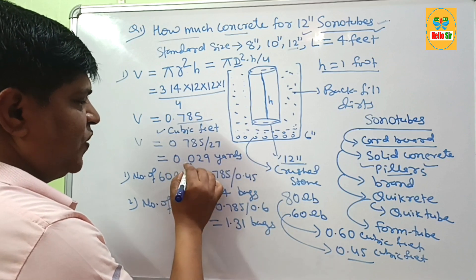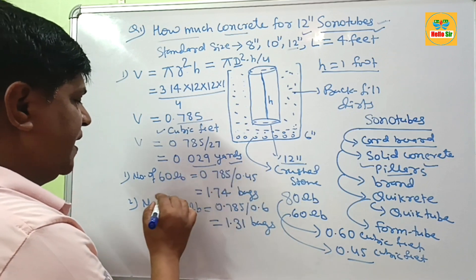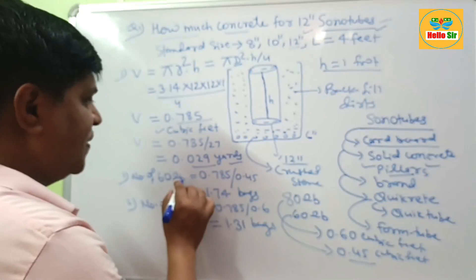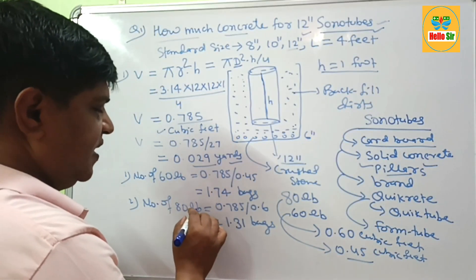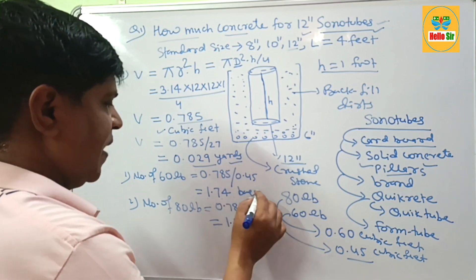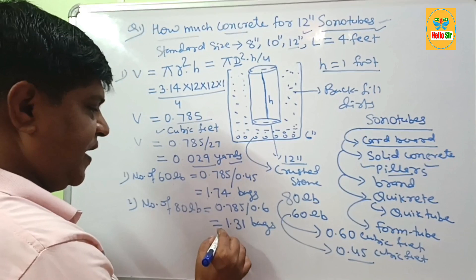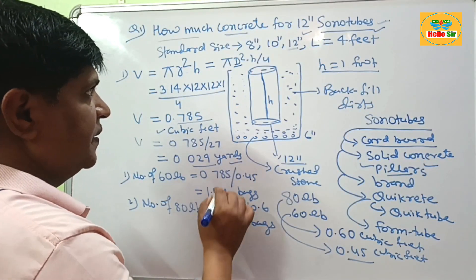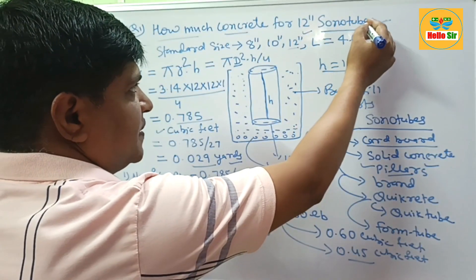If you measure in yards, 0.029 yards. And if you want to know how many 60 lb bags of concrete are required and 80 lb bags of concrete are required, this is about 1.74 bags of 60 lb concrete and 1.31 bags of 80 lb concrete is required to fill 12-inch sonotubes.